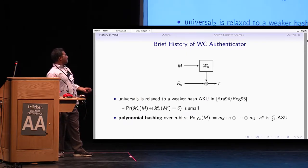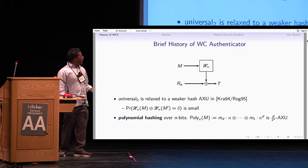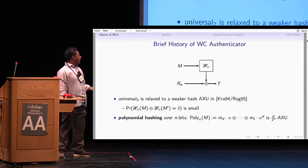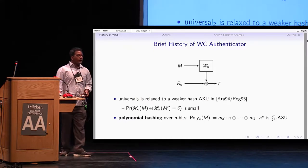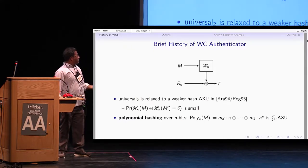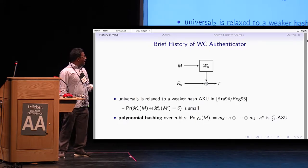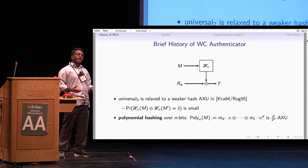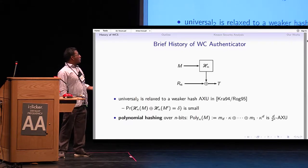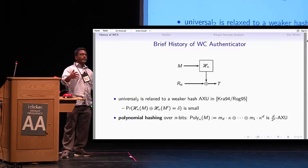For example, you can consider polynomial hashing — the hash I will mostly consider throughout this talk. You have a key kappa, and you view the message as several blocks which are field elements; these are coefficients of your polynomial evaluated at your secret key. It can be easily shown that for two different messages, the maximum differential probability is at most d over 2^n, where d is the degree of the polynomial, i.e., the number of blocks in your message.